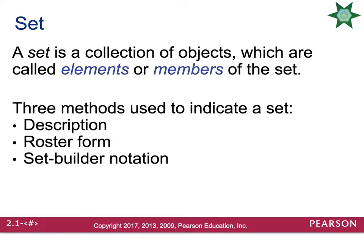The first definition is the term set. A set is a collection of objects. These can be called elements or members of the set. There are going to be three ways that you can describe a set: you can use a simple description, you can use what's called roster form, or you can also use set builder notation.